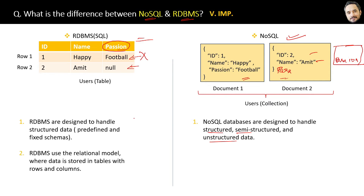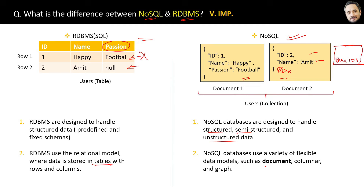That is the biggest and main difference. The second difference is that RDBMS uses the relational model, where data is always stored in tables with rows and columns — there is no other option. Whereas NoSQL databases use a variety of flexible data models, such as document-oriented, column-oriented, graph-based, etc. The document-oriented model shown above is the most popular one, but yes, there are other formats also. These are the two main differences between NoSQL and RDBMS, and that is the answer to this question.